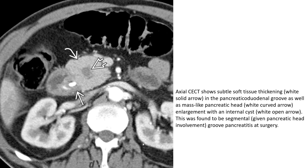Let's see the first case. This is an axial contrast-enhanced CT, which shows subtle soft tissue thickening — indicated by the white slit arrow — in the pancreaticoduodenal groove, as well as mild pancreatic head enlargement with internal cysts indicated by the white curved arrow and wide open arrow.